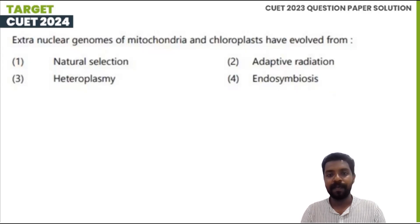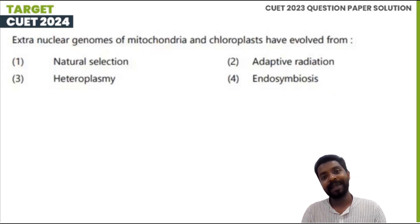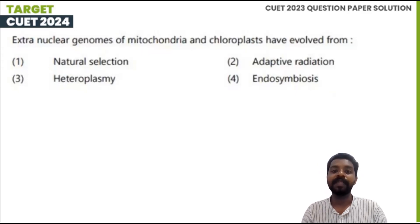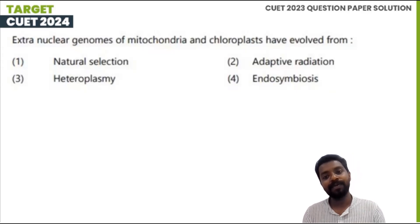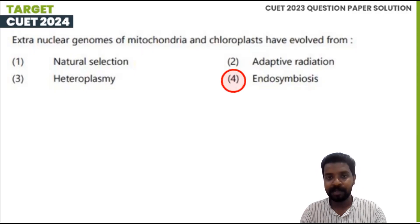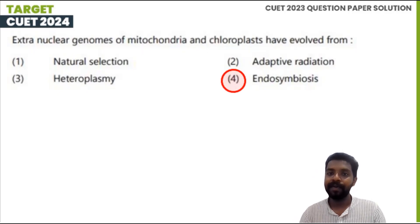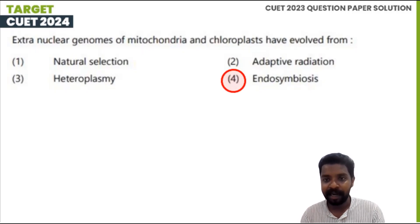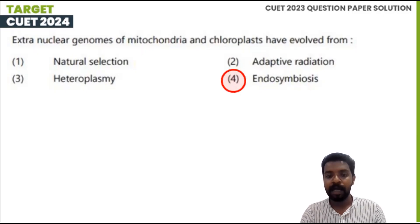Extra-nuclear genomes of mitochondria and chloroplasts — also called extra-chromosomal genomes — have evolved from endosymbiosis. The options are natural selection, adaptive radiation, heteroplasm, and endosymbiosis. Based on the endosymbiotic theory, a prokaryotic organism capable of photosynthesis came to exist within a eukaryotic cell. Option 4, endosymbiosis, is correct.